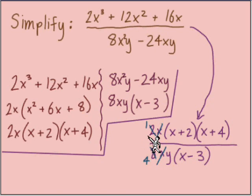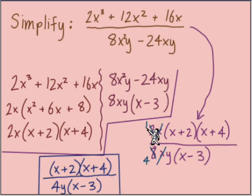Just a little bit of clean up for our final answer. Left over from the numerator, we have our two binomial factors x plus 2 times x plus 4. From the denominator, 4 times y and this binomial factor x minus 3, there's our simplified answer. Sort of a tricky one but just remember what our steps are for simplify: factor then cancel.